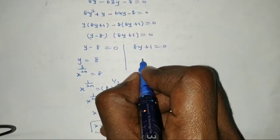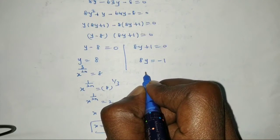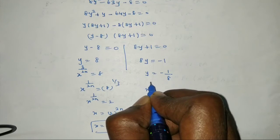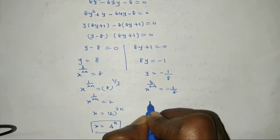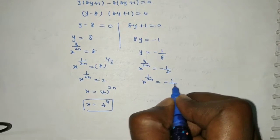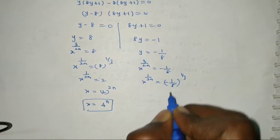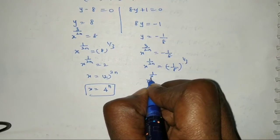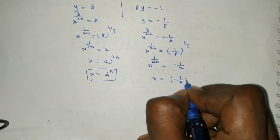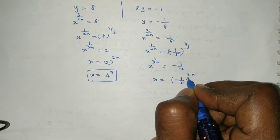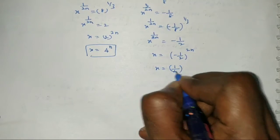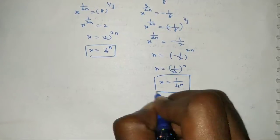For the second case: 8y equal to minus 1, so y equal to minus 1/8. Therefore x^(3/2n) equal to minus 1/8, and x^(1/2n) equal to minus 1/2. Raising to the power 2n gives x equal to 1 divided by 4^n.